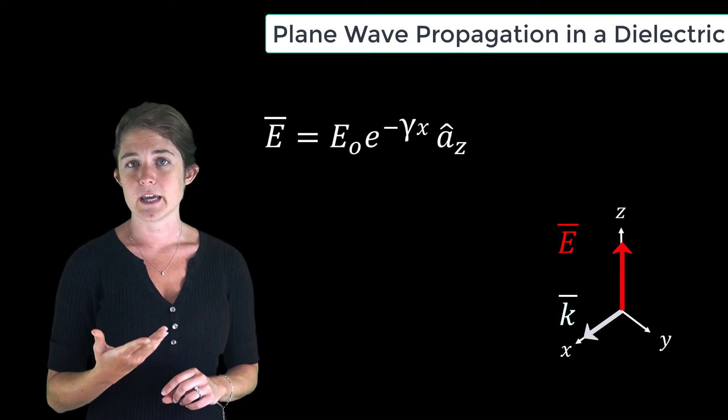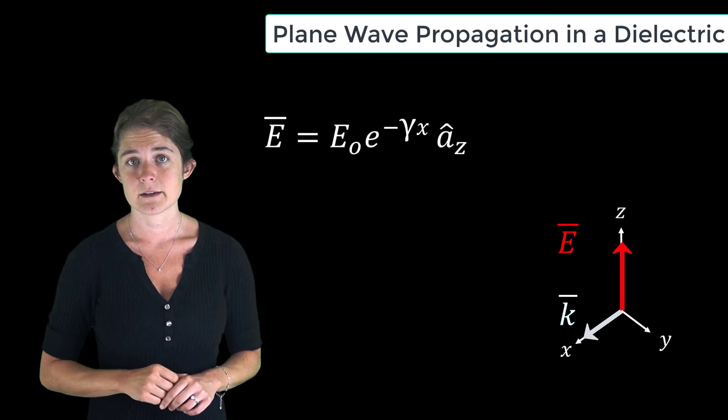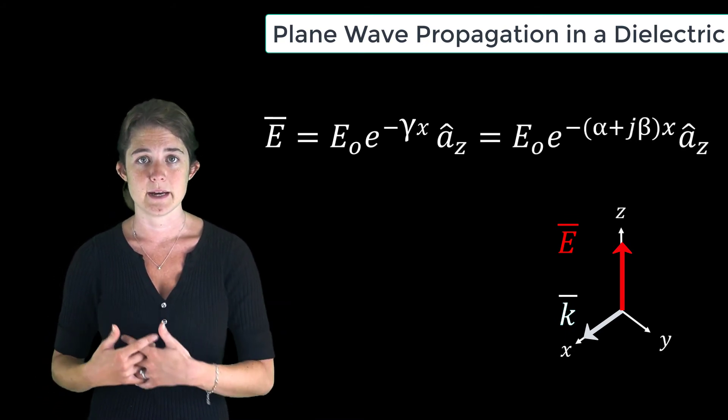But now we're using gamma. So it's e to the negative gamma x, or e to the negative alpha plus j beta x.